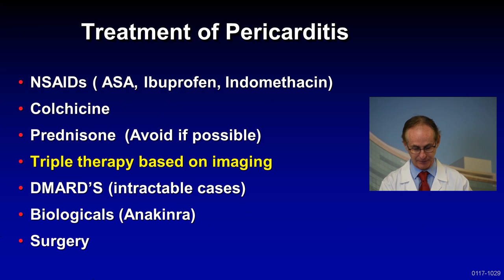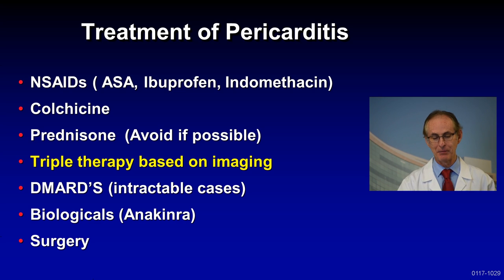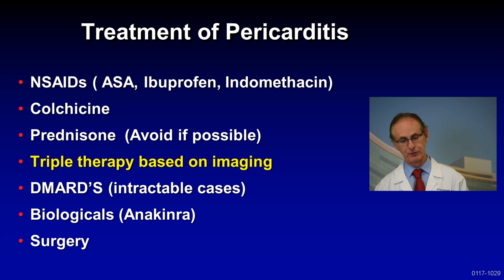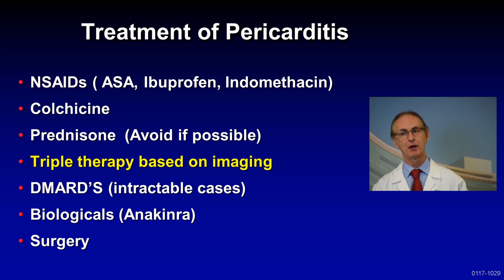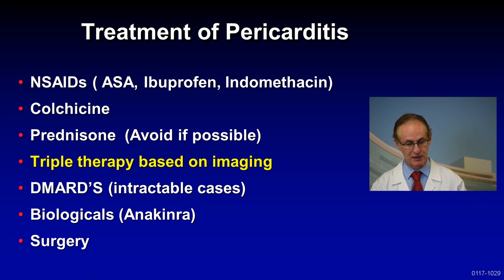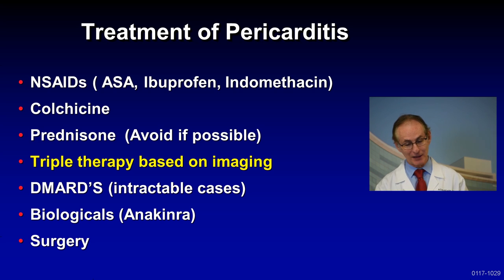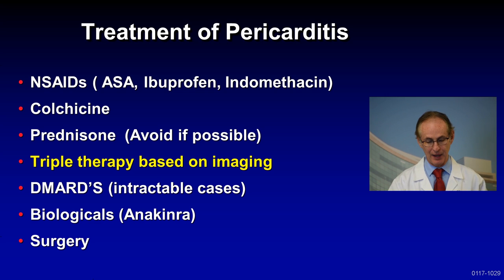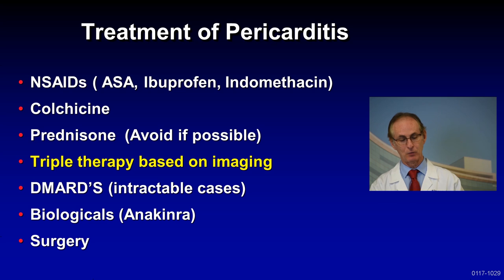Let's talk about established and novel treatments. Classic treatment of pericarditis includes non-steroidal anti-inflammatories — aspirin, ibuprofen, or indomethacin. Aspirin may be given to older patients who may have coronary artery disease; the mainstay is probably ibuprofen or indomethacin. Colchicine is considered first-line, with many studies showing a decrease in recurrences. Prednisone can be given but we try to avoid it, as it could cause more recurrences. Sometimes when the disease is very inflamed, we may have to give triple therapy based on imaging — that includes an NSAID, colchicine, and prednisone. For intractable cases, you may have to give a DMARD — disease-modifying agent — such as azathioprine, or biologics called anakinra, and rarely do we do surgery.